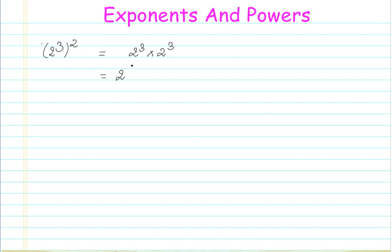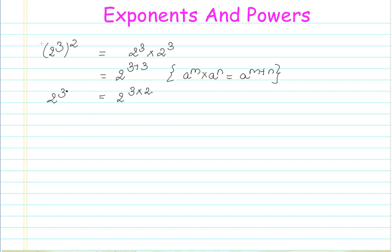Now I can say that this is 2 to the power of 3 plus 3, applying the property we already discussed: a raised to m multiplied by a raised to n equals a raised to m plus n. I can further write this as 2 to the power of 3 into 2. So 2 to the power of 3, raised to 2, is actually 2 to the power of 3 × 2.